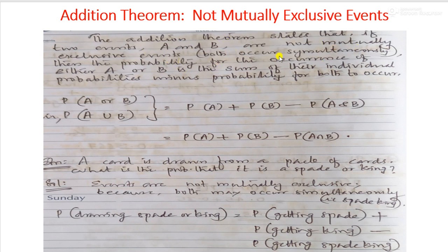When events are not mutually exclusive, it means both can occur simultaneously. Then the probability for the occurrence of either A or B is the sum of their individual probabilities minus the probability for both to occur together. That is, P(A union B) equals P(A) plus P(B) minus P(A intersection B), where P(A intersection B) is the joint probability, which is subtracted.